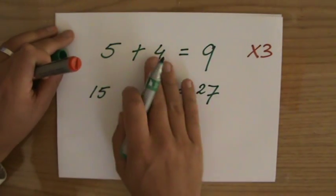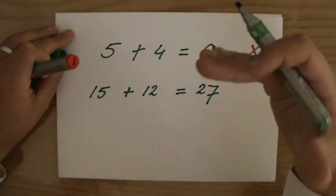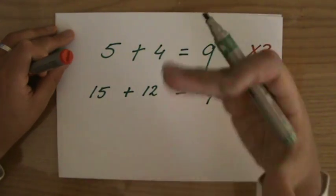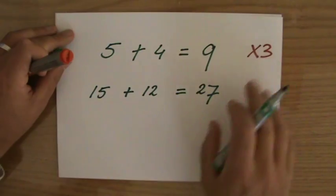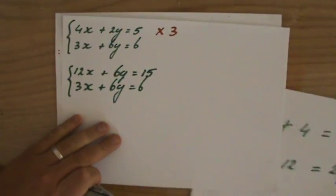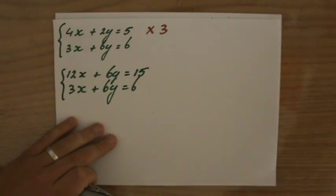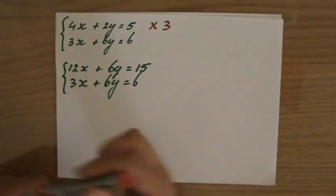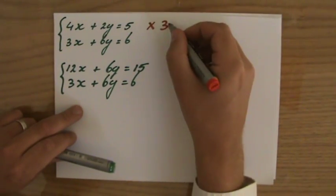So as long as I multiply all the terms by 3 or by 4 or if I multiply all of them by 7, it is still true. Okay. So back to this situation. I've multiplied them all by 3.